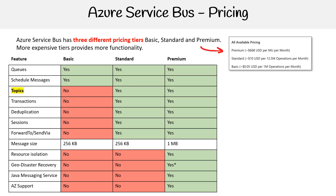Here is the chart, so let's take a look at what the differences are. I highlighted topics in yellow to show you that it is not in the basic tier — you have to have standard in order to utilize that. For your purposes as a person learning Azure Service Bus, you absolutely need to give topics and queues a go, because queues is the classic messaging model and topics is pub-sub.